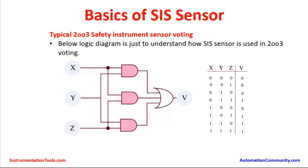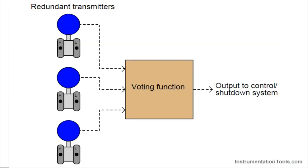Here we are seeing a logic truth table for a typical two-out-of-three safety instrumented sensor voting. The process requirement may be very high accuracy based on the process and the size of the equipment being protected — such as a boiler, distillation column, or high-pressure piping protected against hazards by safety instrumented systems. There will be three transmitters to measure the pressure, or level if it is a vessel, or temperature.